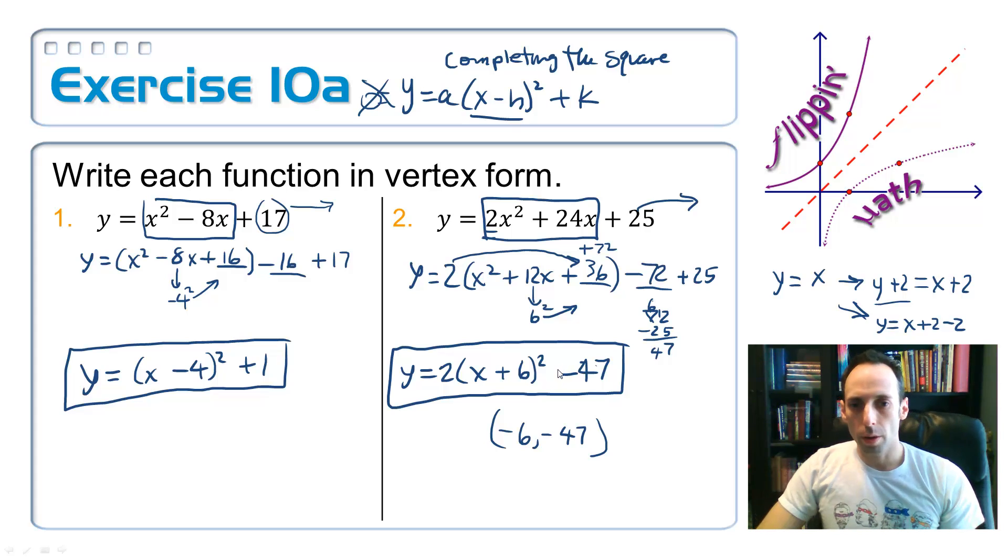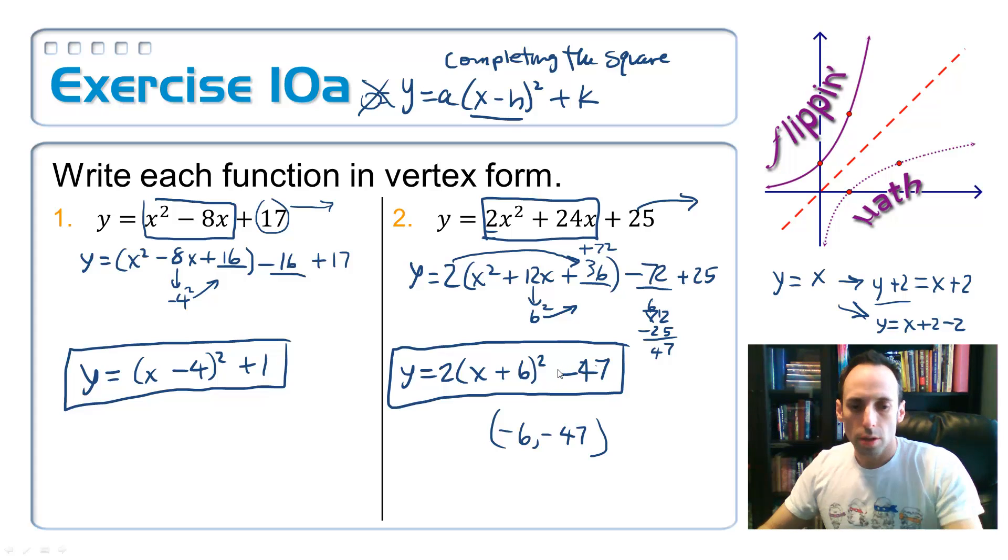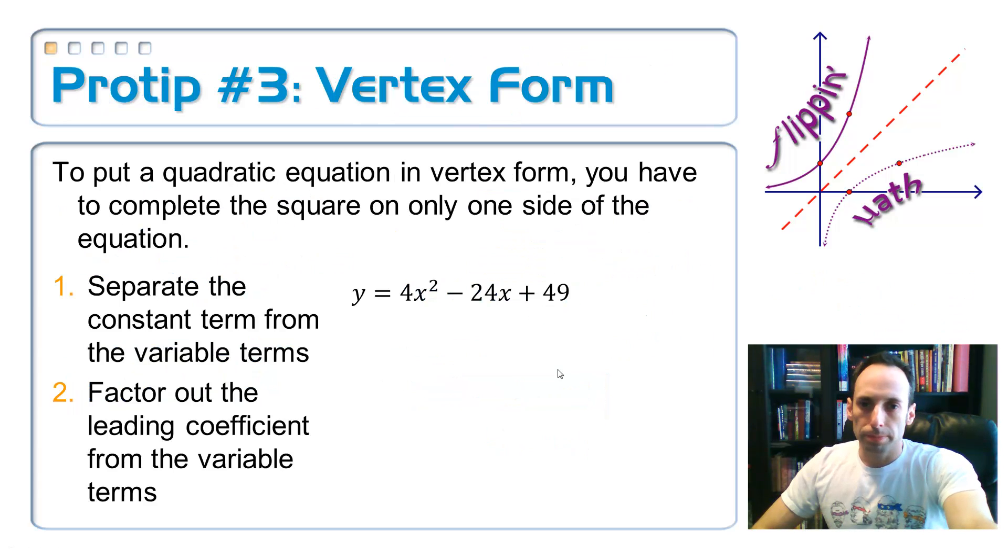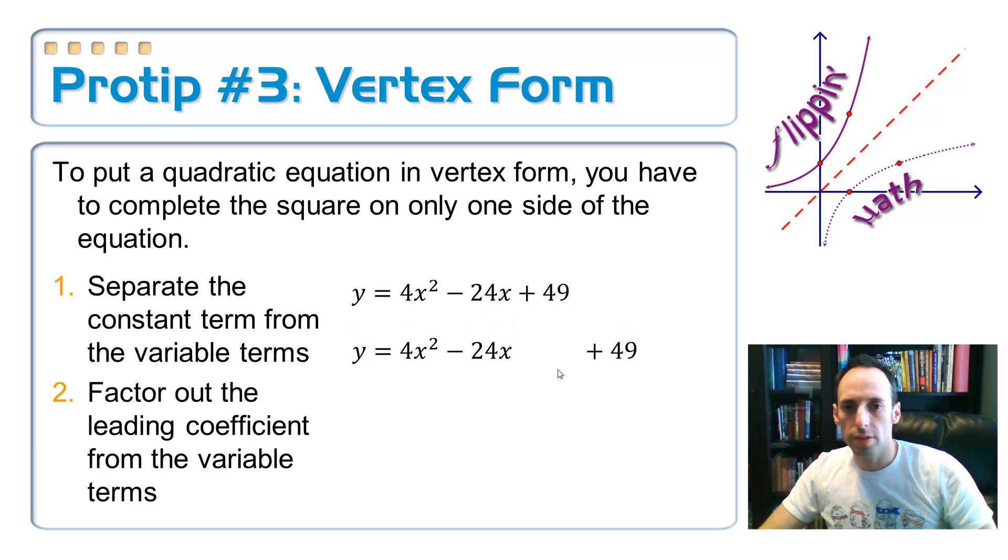So let me give you a pro tip on this one here. So first, whenever we're trying to put it in vertex form, pro tip number 3 here, you're going to separate the constant term from everything else. You're going to push that off to the side. Now if you have a GCF, so step number 2.